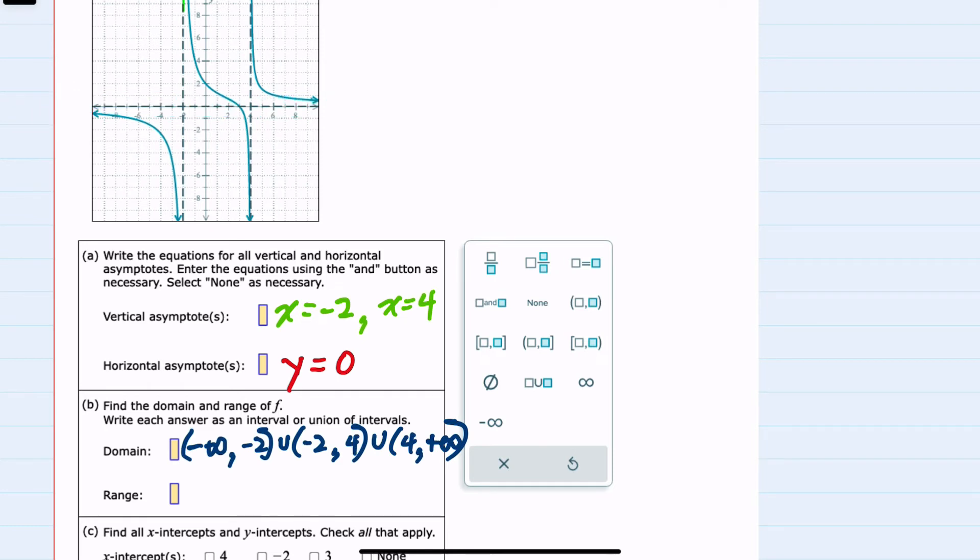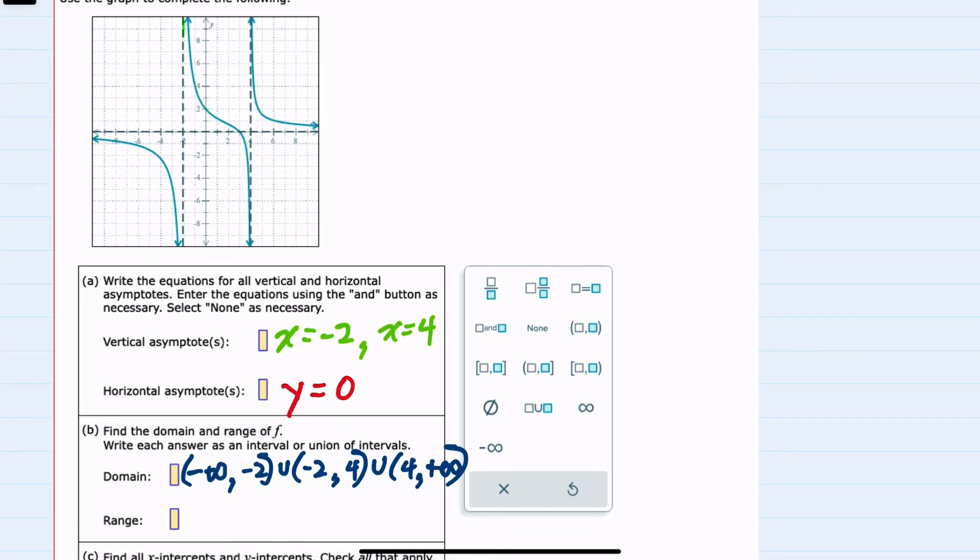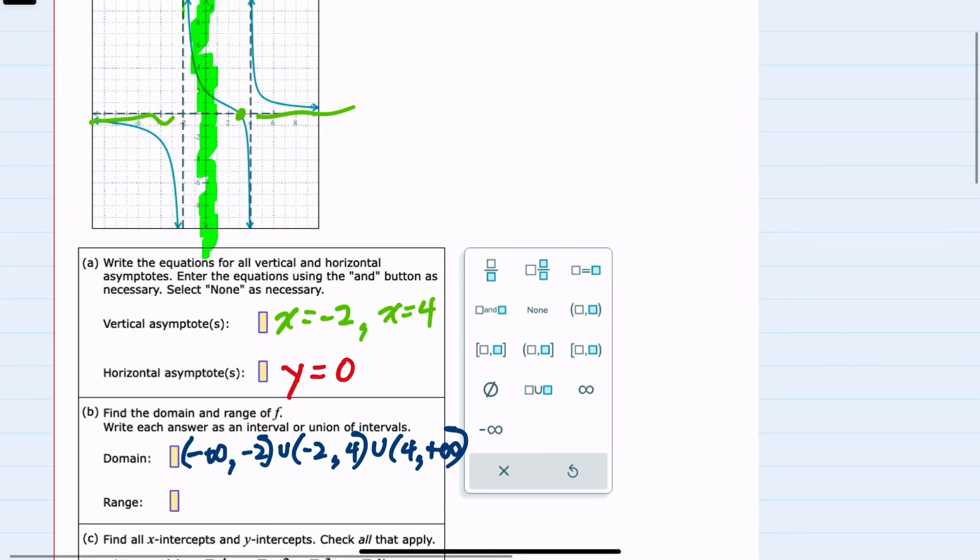Next we're asked for range, and so if we were looking up and down, this graph at some point has every possible y value. Even though it has an asymptote at y equals 0, those asymptotes are really just in effect out here on the edges. Between, we can see that it does actually cross the value y equals 0. So our range will be all reals, so negative infinity to positive infinity.